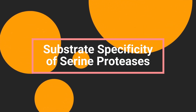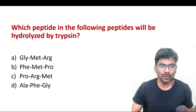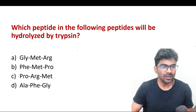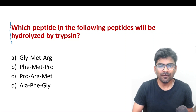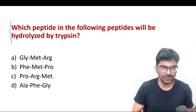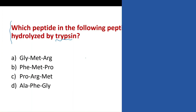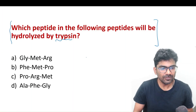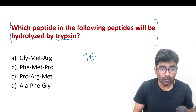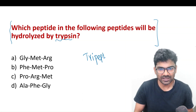Dear friends, let us begin our discussion with two multiple-choice questions. Look at this — which peptide in the following peptides will be hydrolyzed by trypsin? In the options, they have given the sequence of four tripeptides.